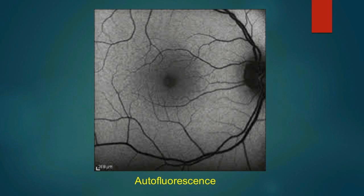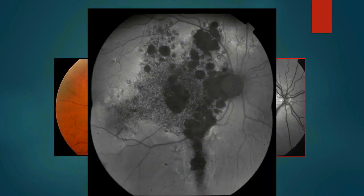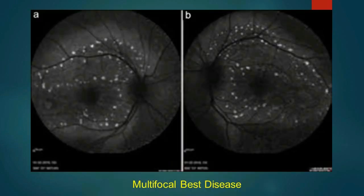It highlights lesions as either hypo-autofluorescence, as seen in this case of CSR, or hyper-autofluorescence, as seen in this case of multifocal Best disease.